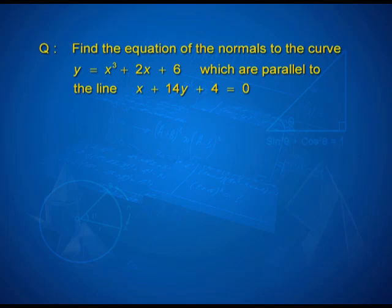We have another problem where the information is indirect. Find the equations of the normals to the curve y = x³ + 2x + 6 which are parallel to the line x + 14y + 4 = 0. What you are given directly or indirectly is that the normal to the curve is parallel to this line. So the slope of the line will be the same as the slope of the normal. You know the slope of the normal — what is the second thing you need? The point of contact. Our main work will be to get that point of contact through the given information.